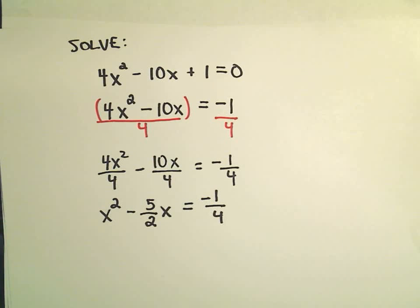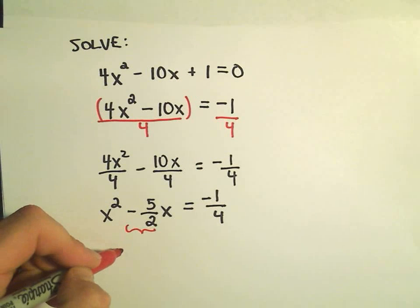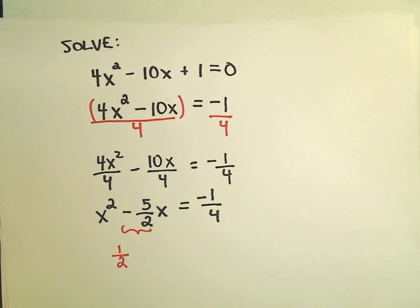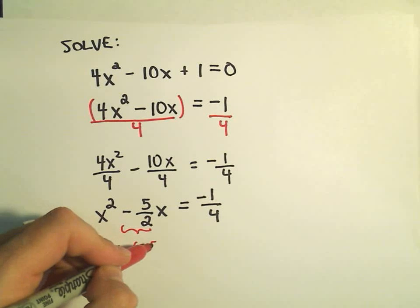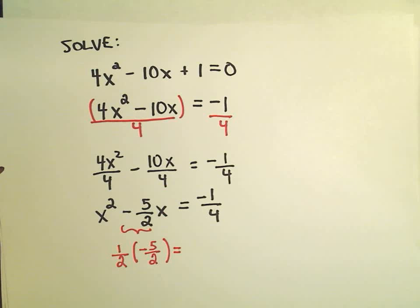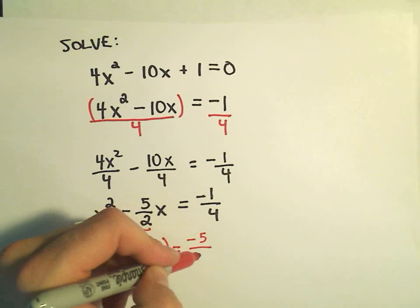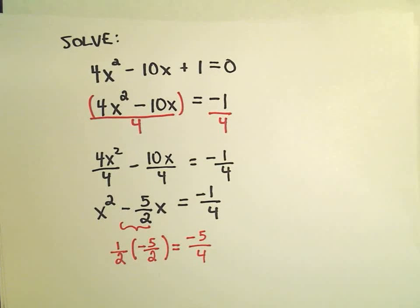So, now again, this is where it's a little tricky because whatever number's in front of the x, we take 1/2 of that number. So, we're going to take 1/2 of -5/2. Well, we're multiplying two fractions. So, we just multiply across the top. That'll give us -5. And on the bottom, we'll get positive 4.